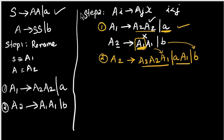Now we check the new productions. A2 gives A2 A2 A1 is a left recursion because A2 appears on both sides. The production A2 gives a A1 is fine since it starts with a terminal. We need to remove this left recursion.